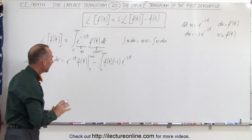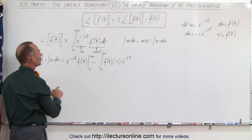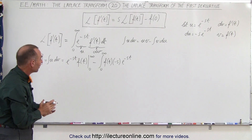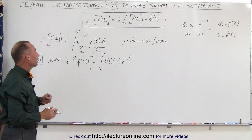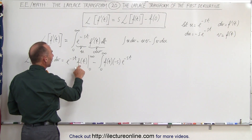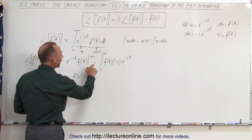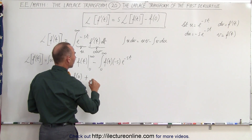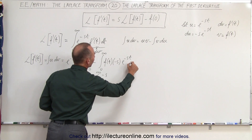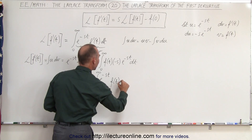Let's clean it up and evaluate. The Laplace transform of the first derivative is equal to this expression. When we plug in the upper limit, we get e to the minus infinity, which equals zero regardless of the function — so that term becomes zero. When we plug in the lower limit, e to the zero is one, and f evaluated at t equals zero is simply minus f of zero. The two negatives combine to give plus s times the integral from zero to infinity of e to the minus st times f of t dt.